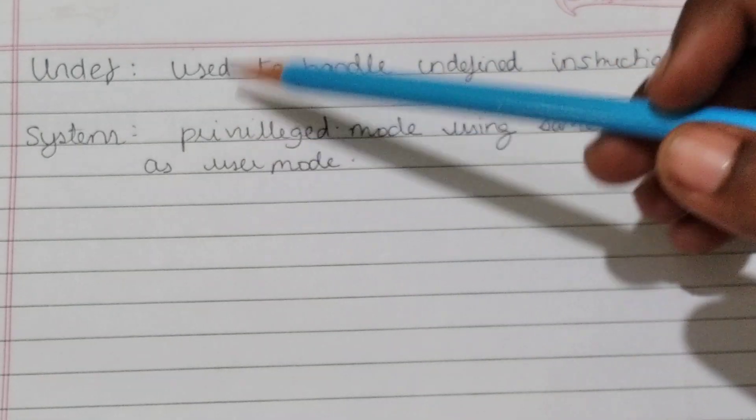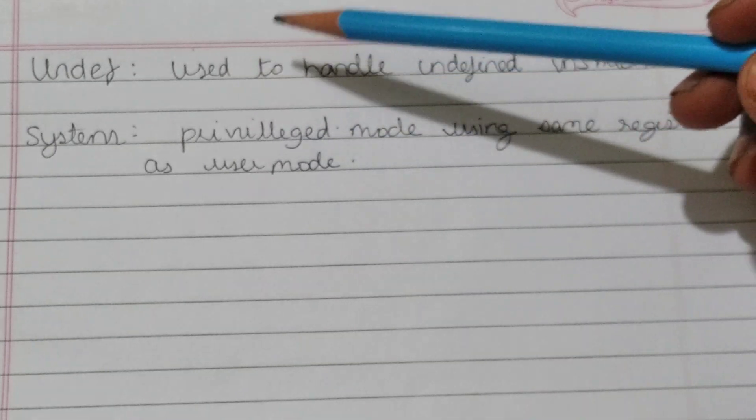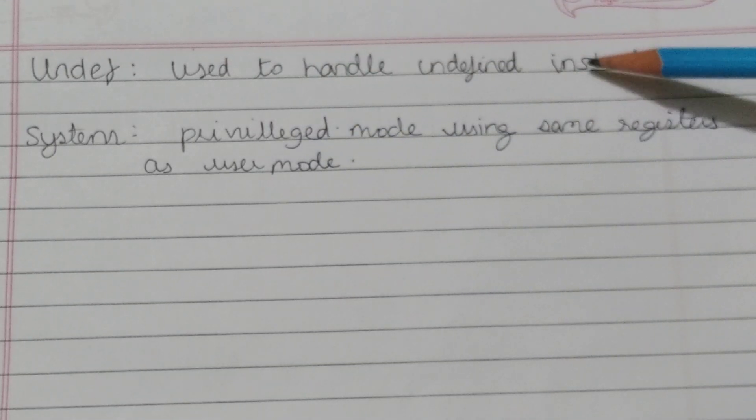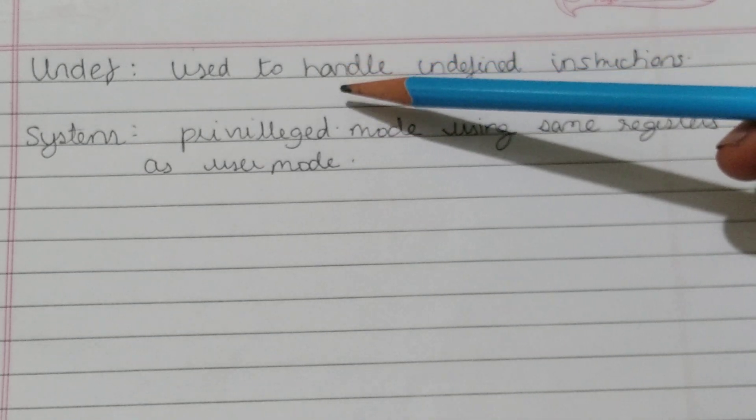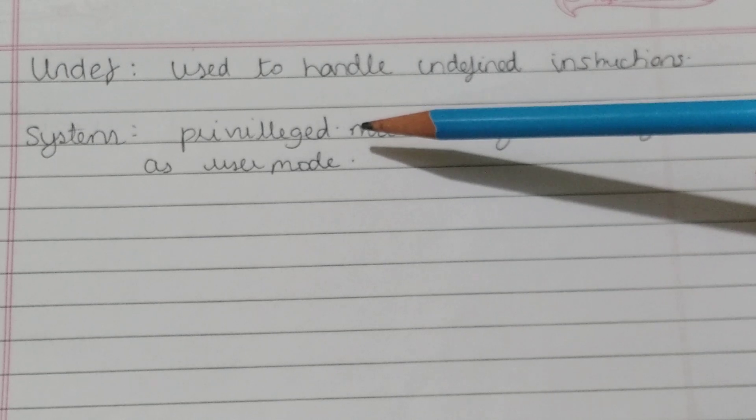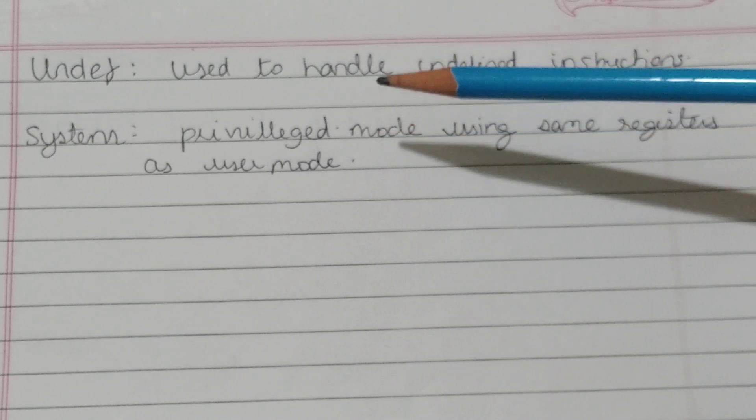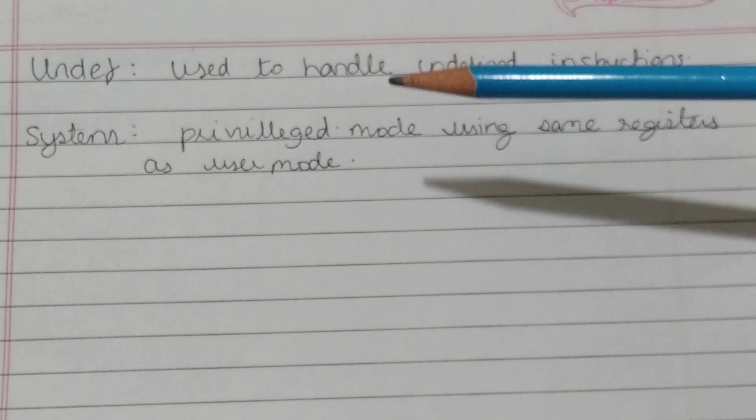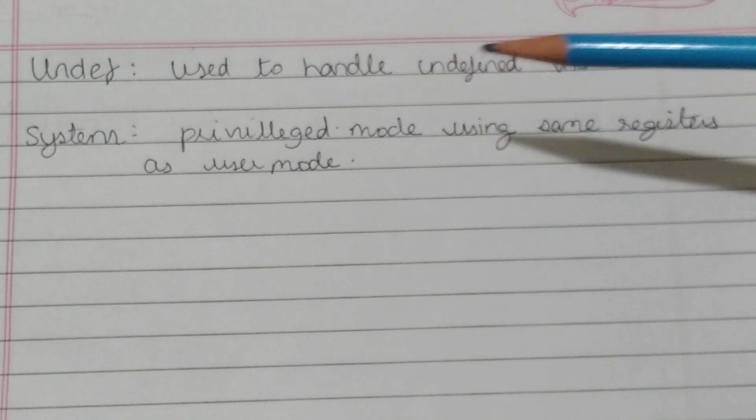Then comes the undefined. So undefined mode - used to handle undefined instructions. It is entered by the ARM7 when it comes across an instruction which it cannot handle. It offers this instruction to coprocessor which may be present in the system.